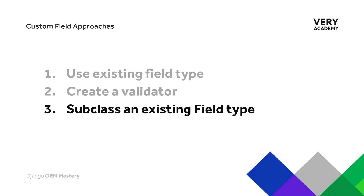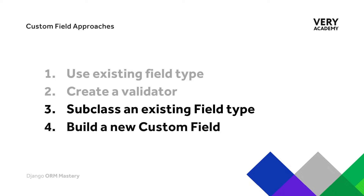If an existing field type with additional validation isn't going to meet our needs, we might then think about building a custom field. There are two general approaches we can take. The first is to take an existing field which has some of the characteristics we need, subclass it, and then override and add additional features. The second option would be to simply build a new custom field from scratch.